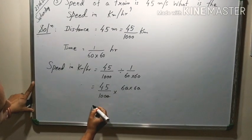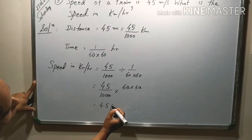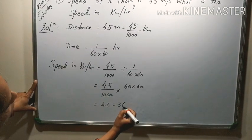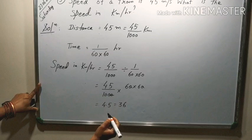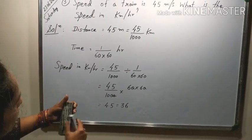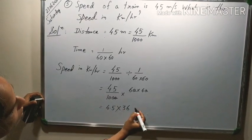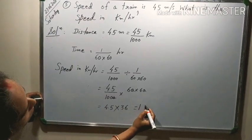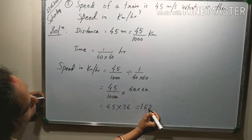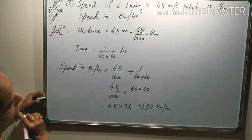So it is 4.5 into 36, 6. It is in kilometer per hour. 45 into 36, when we solve we get 162 kilometer per hour.